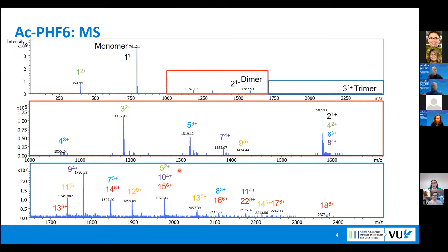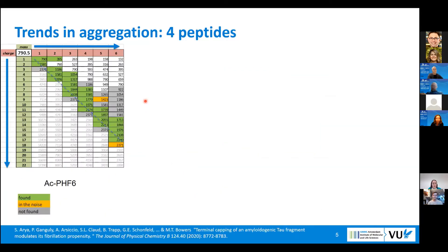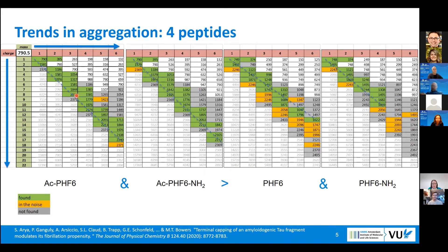If we want to summarize all this information about the oligomers that are formed, we can do it in a table. This is a table. On top, we have the charge state and the rows are the number of monomers that are present within the oligomer. The green cells are oligomers that were found and yellow are the ones that were found but in the noise, and the rest were not observed.